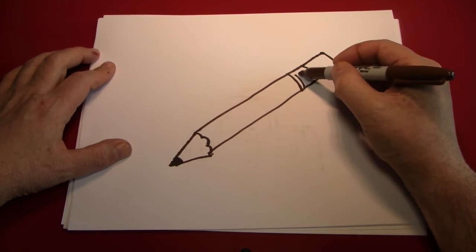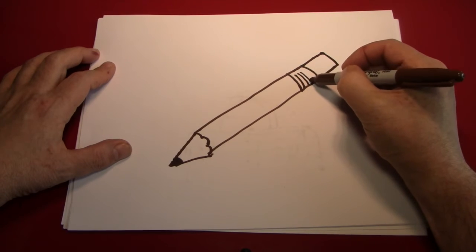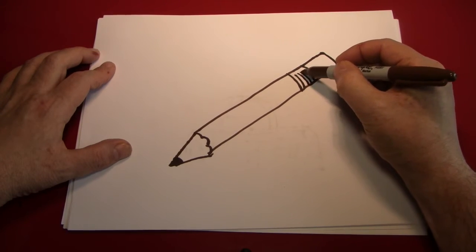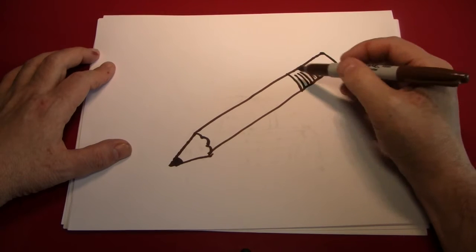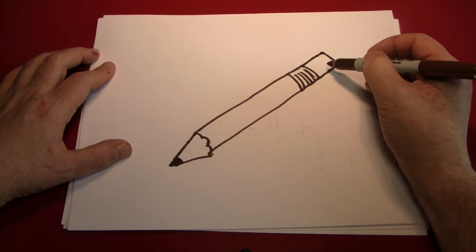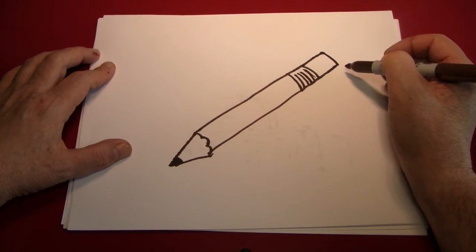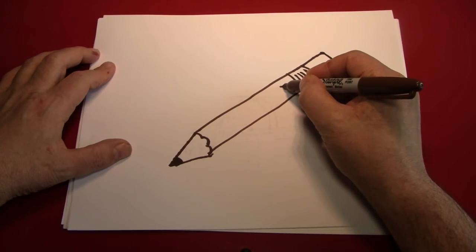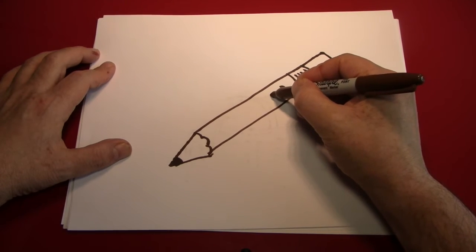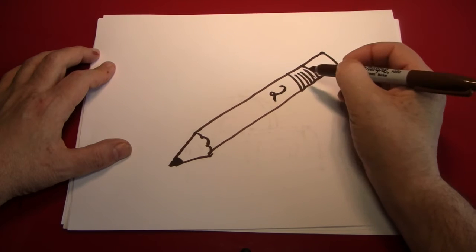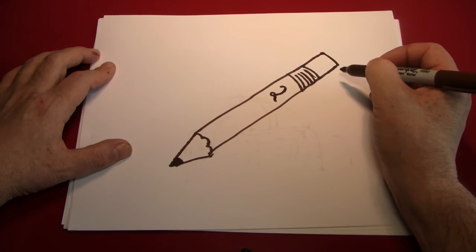Let's make some lines going through the metal part to indicate that that's in fact what it is. That little metal ferrule strip that connects the eraser to the pencil. And then put a little number two, so we know that this pencil is good enough to take the SATs with.